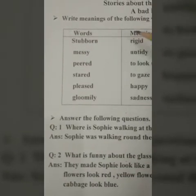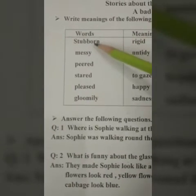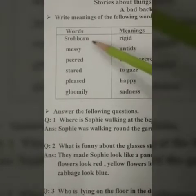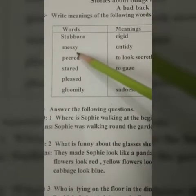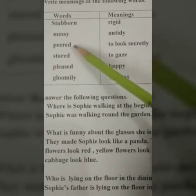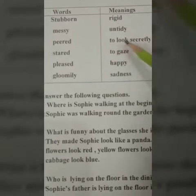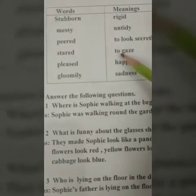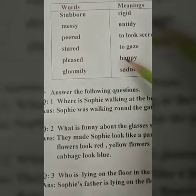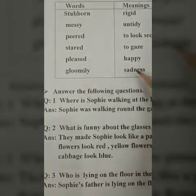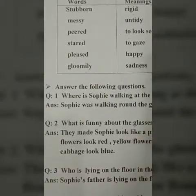Words and meanings: 'stubborn' — rigid, ziddi. 'Messy' — untidy. 'Peered' — to look secretly. 'Stared' — to gaze. 'Pleased' — happy. 'Gloomily' — with sadness.